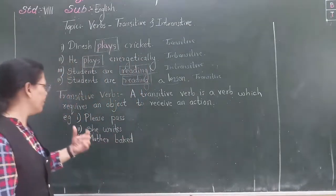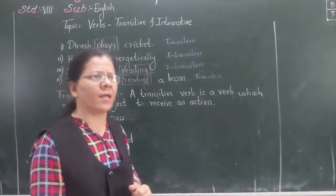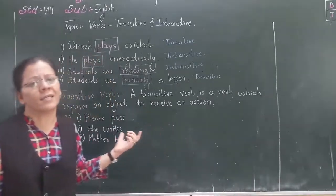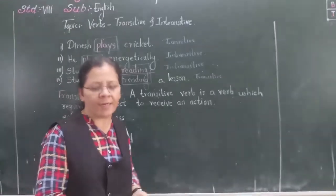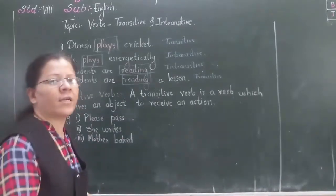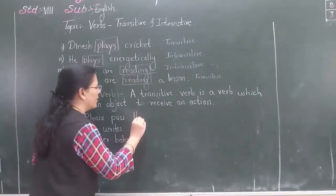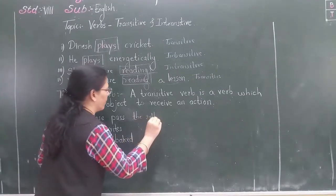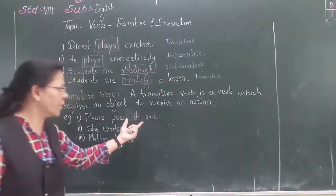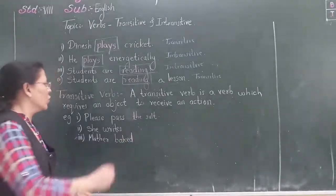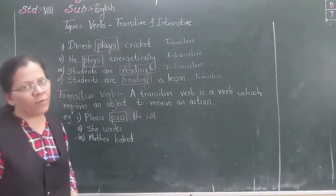Let us see some examples. 'Please pass.' Now if I say 'please pass', is the sense clear to you? No, the sense is not clear. So we need an object to clear the sense. 'Please pass the salt.' Now here you have an object — salt. So the verb pass is a transitive verb.